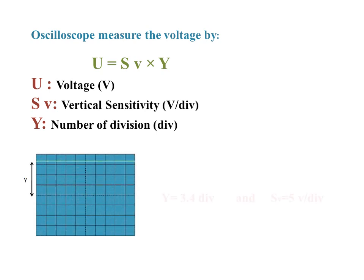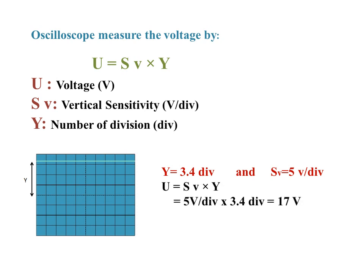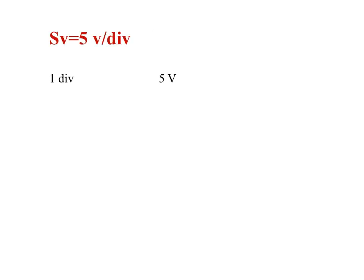For example, from this screen, the number of vertical divisions Y is 3.4 divisions, and the vertical sensitivity scale equals 5 volts per division. Using the formula U = Sv × Y: Sv = 5 volts per division times Y = 3.4 divisions equals 17 volts.